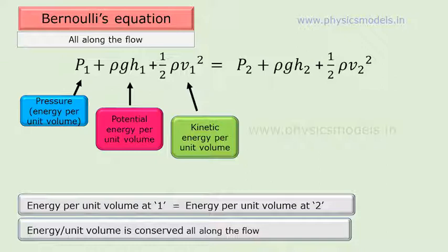And on the right hand side, we have the conditions at the tap outlet. P2 is the pressure of water at the tap. ρgh2, h2 is the height of the tap from the ground. Half ρv2 squared, v2 is the velocity of flow from the tap outlet.